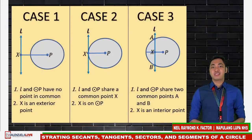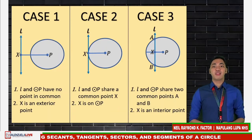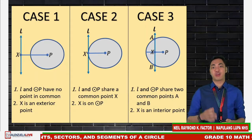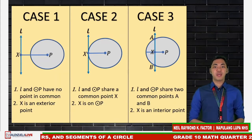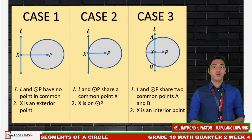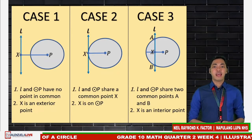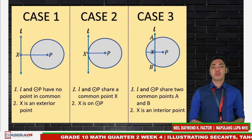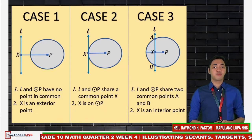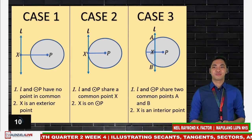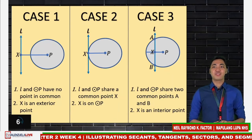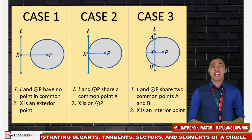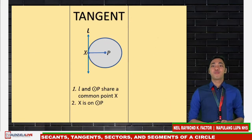Let us look at these three cases on the screen. For case number one, line L and circle P have no point in common, and X is an exterior point. For case number two, line L and circle P share a common point, which is X, and so X is on circle P. For case number three, line L and circle P share two common points, which are A and B, and X here is an interior point.